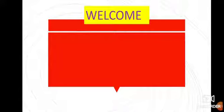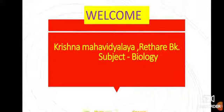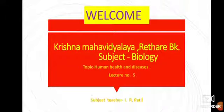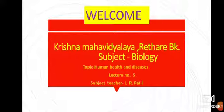Welcome students. Today we will learn about the types of cells present in acquired immunity. This is the fifth lecture on the topic Human Health and Diseases. In the last lecture, we studied about the types of acquired immunity.